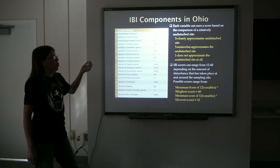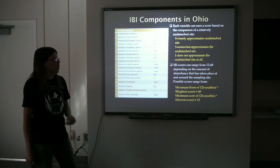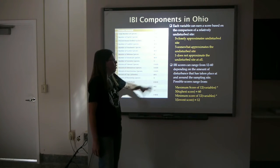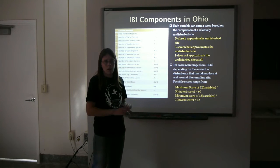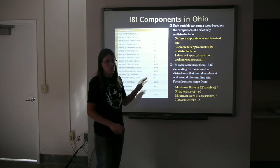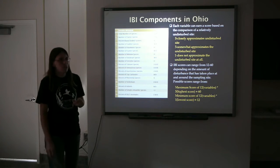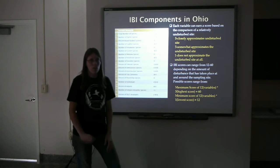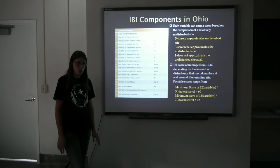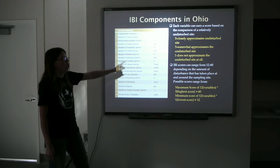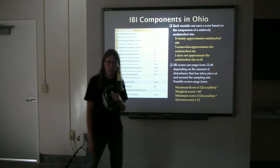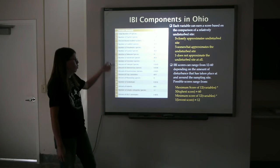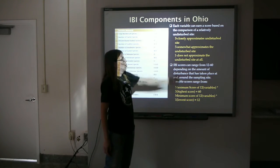Each variable will earn a score based on the comparison to the undisturbed site. A score of 5 means the variable is very close to the undisturbed site. A score of 1 means our site does not match up with the undisturbed site at all. A score of 3 is somewhere in the middle. IBI scores can range from 12 to 60. Even if you got no fish at a site, it would still score a 12 because each metric would still get a 1. A score of 60 is the highest — each metric would have scored a 5, showing it closely approximates the undisturbed site.